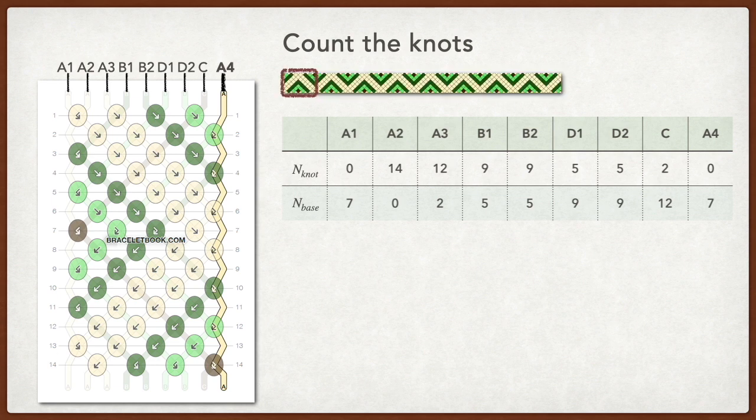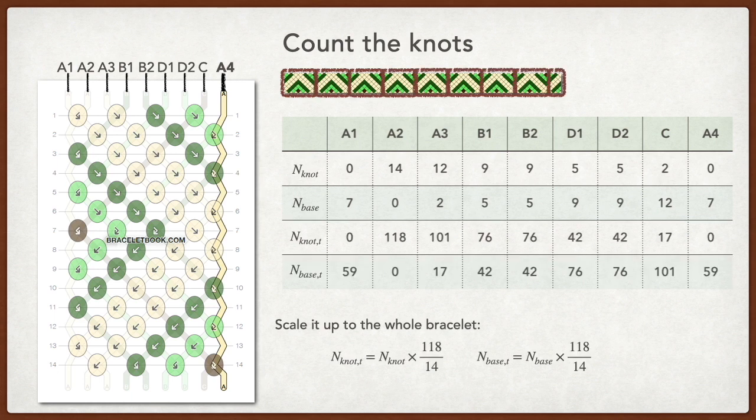This pattern has only 14 rows. We need to repeat this pattern until we reach the desired length, which is 118 rows, as we calculated before. The total occurrences as knotting string and base string for each string can be scaled up to the whole bracelet like this.